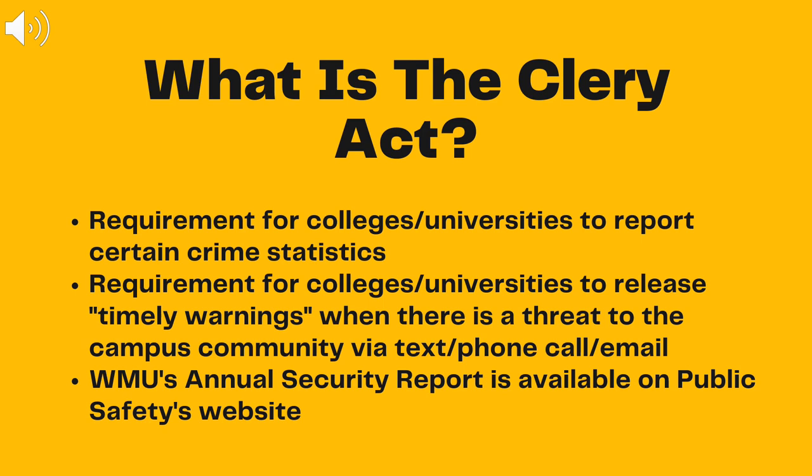Under the Clery Act, colleges and universities are required to release timely warnings to the campus community when there are known risks to public safety on campus. At Western Michigan University, timely warnings are sent out simultaneously via text, phone call, and email to all of campus. Though the Act dictates that campus security must release warnings for any on-campus threat, WMU will often send warnings out for threats occurring in the areas surrounding campus as well. Any decision not to issue a timely warning for a risk can be reviewed by the Department of Education.